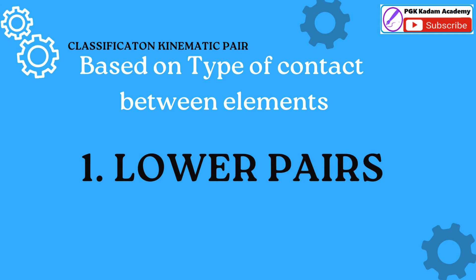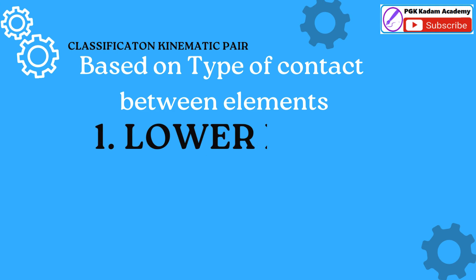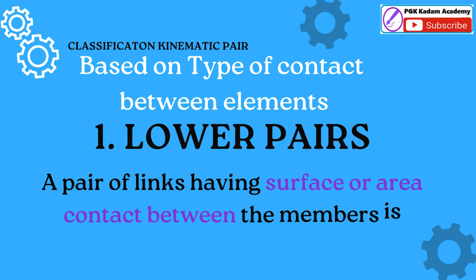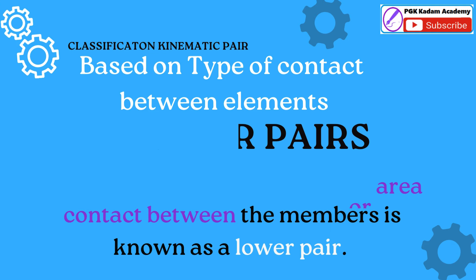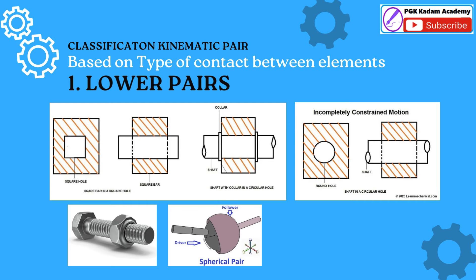Second Kinematic Pair classification: based on type of contact between elements. Lower Pairs: A pair of links having surface or area contact between the members is known as a lower pair. The surfaces in contact of the two links are similar. When the two elements have surface contact as relative motion takes place and the surface of one element slides over the surface of another element, the pair forms a lower pair. Examples: all sliding, turning, and screw pairs are lower pairs.